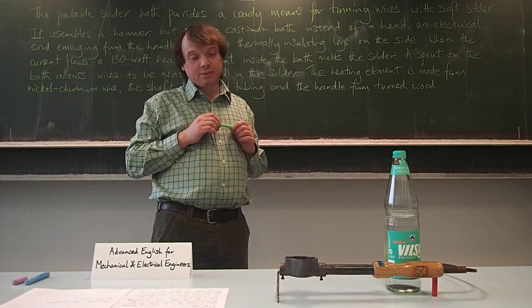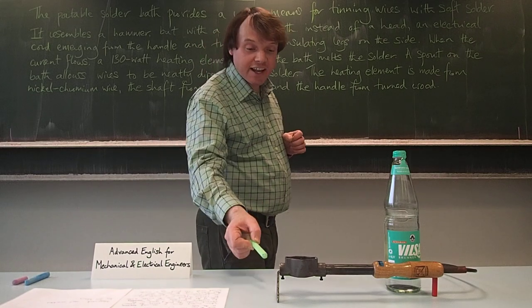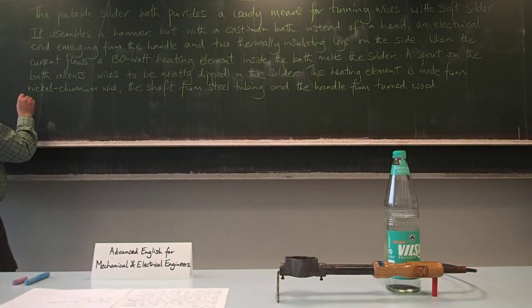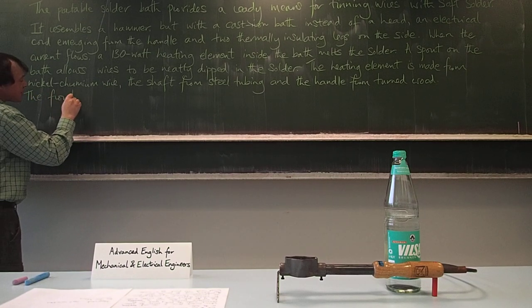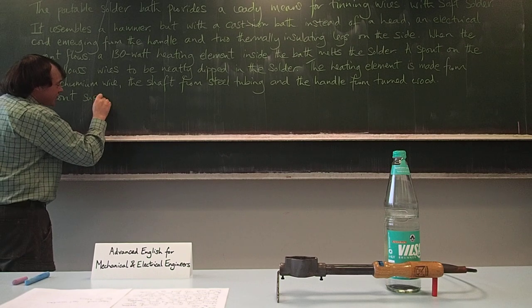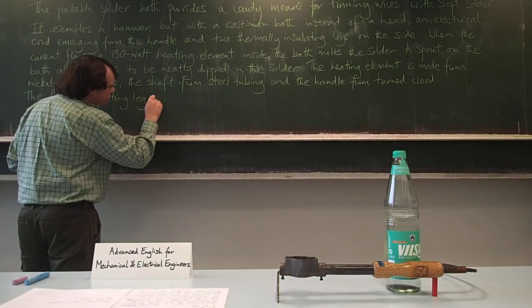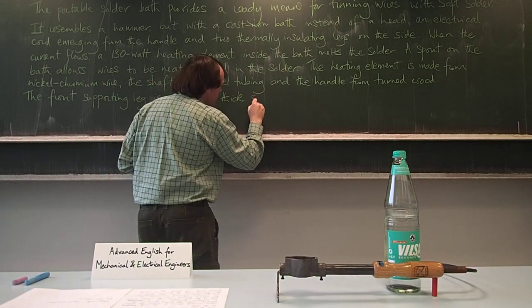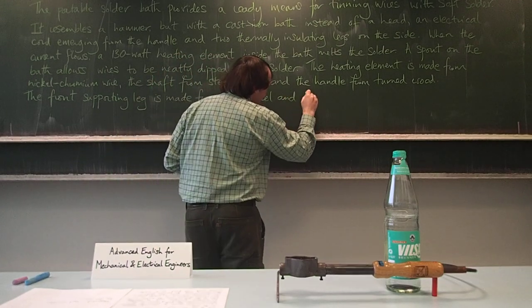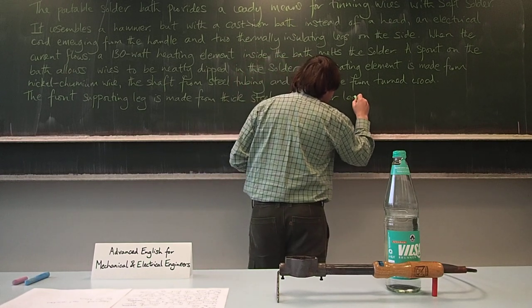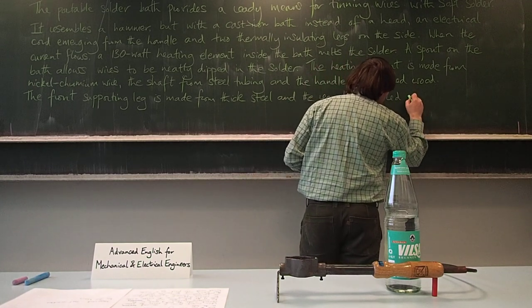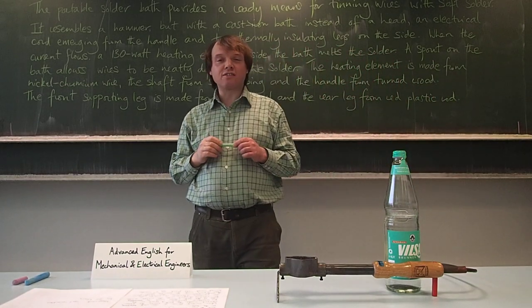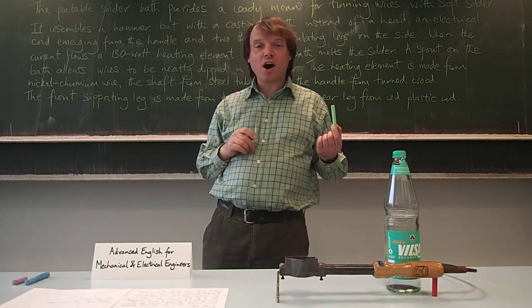We can now have one more sentence, perhaps describing what the legs are made from. And you can see here the front leg is made from thick steel wire and the rear leg from red plastic rod. So we can also have an extra word here to emphasize the function. The front supporting leg is made from thick steel wire, and the rear leg from red plastic rod. Rod and bar are more or less synonyms, but normally bar would be used with metals.